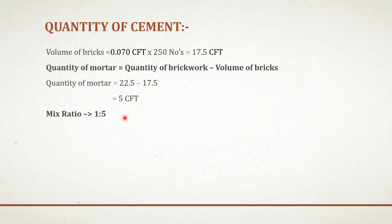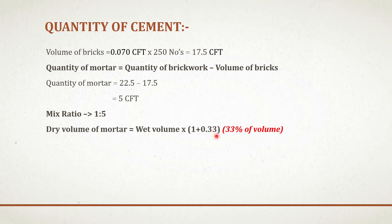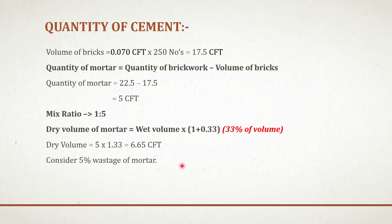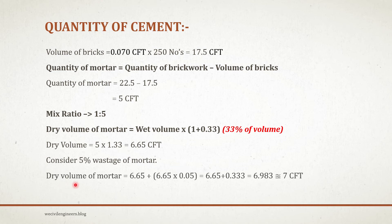Let's say mix ratio is 1 to 5. To get the dry volume of mortar, we have to multiply wet volume by 1.33, which means dry volume of mortar is 33% greater than the wet volume. Dry volume equals to 5 multiplied by 1.33, which is 6.65 cubic foot. There will be some wastage on site, so I am considering 5% wastage of mortar. Dry volume of mortar including wastage equals to 6.65 plus 5% of 6.65, which is 6.65 plus 0.333, giving approximately 7 cubic foot.